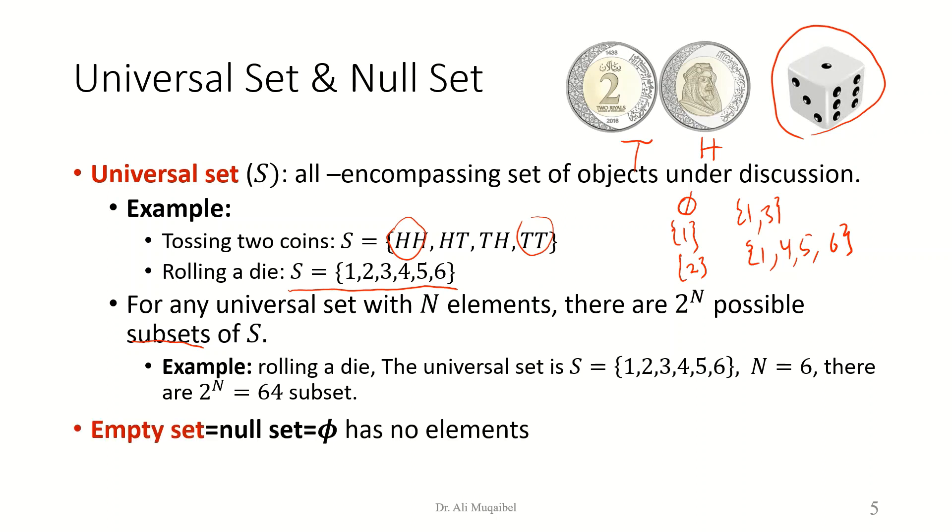Just like we define the universal set, the opposite of that will be the null set, which is the set that contains nothing. It's called the empty set, the null set, and it has no elements inside.